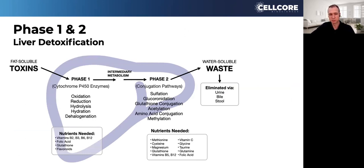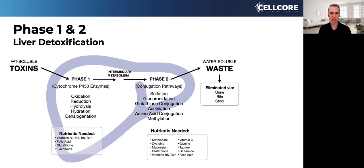Phase one is essentially the preparation phase with the cytochrome P450 enzymes and oxidation, and then it takes it to phase two where it conjugates. This is where a lot of the fancy words people have probably heard — glucuronidation, glutathione, methylation, acetylation, sulfation — happen.